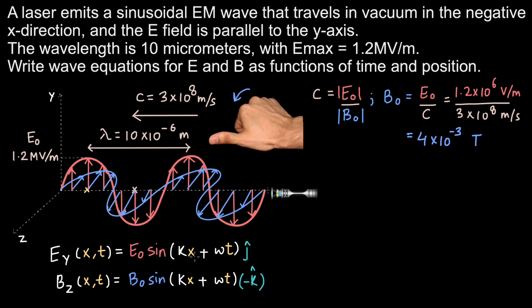Next, we calculate the wave number k and the angular frequency omega. k = 2π/λ, where λ = 10⁻⁵ meters, giving k = 6.3 × 10⁵ radians per meter.